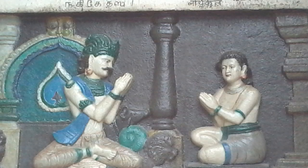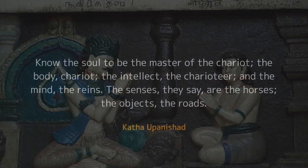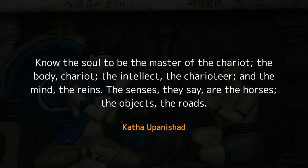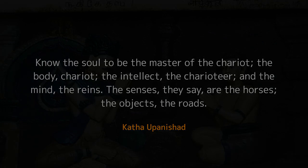A similar allegory can be seen in the Katha Upanishad: 'Know the soul to be the master of the chariot, the body the chariot, the intellect the charioteer, and the mind the reins. The senses, they say, are the horses; the objects, the roads.'